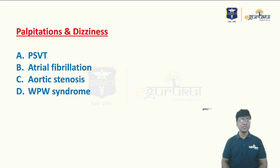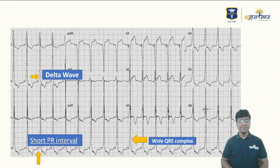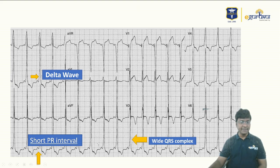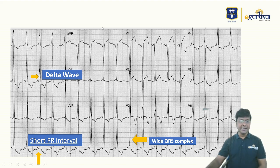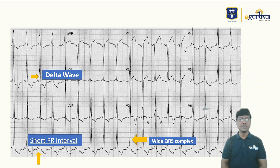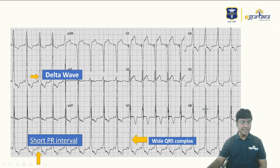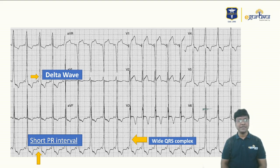You need to identify the abnormalities in this ECG. Number one, there is a short PR interval — I've marked it with an arrow. The normal PR interval is 120 to 200 milliseconds, and here it is less than 120 milliseconds. Second, there is a wide QRS complex — normal is 70 to 100 milliseconds, and here it is more than 100 milliseconds. Third, there is slurring of the R wave, which is the delta wave.